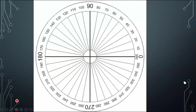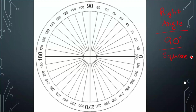Now let's make a right angle. A right angle has to be exactly 90 degrees, and it takes the form of a square instead of a circle. Again we have to start off by marking our vertex, placing the first ray at zero, and the second ray at 90 degrees. Instead of forming a circle, it will form a square like this. This is exactly 90 degrees.